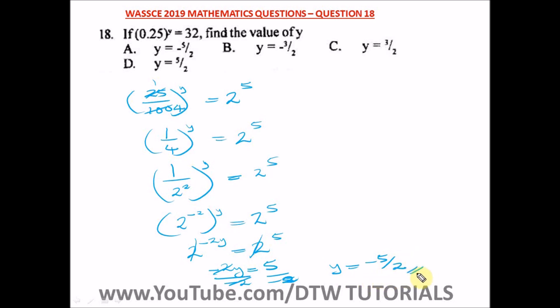This is our answer: y is equal to minus 5 over 2, and our right option here is option A.